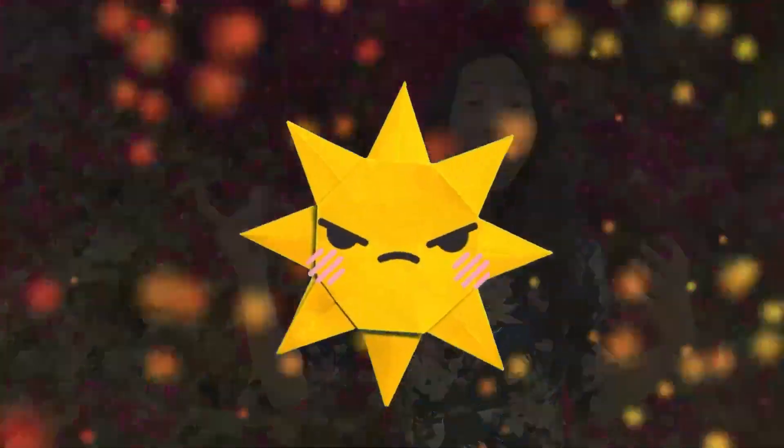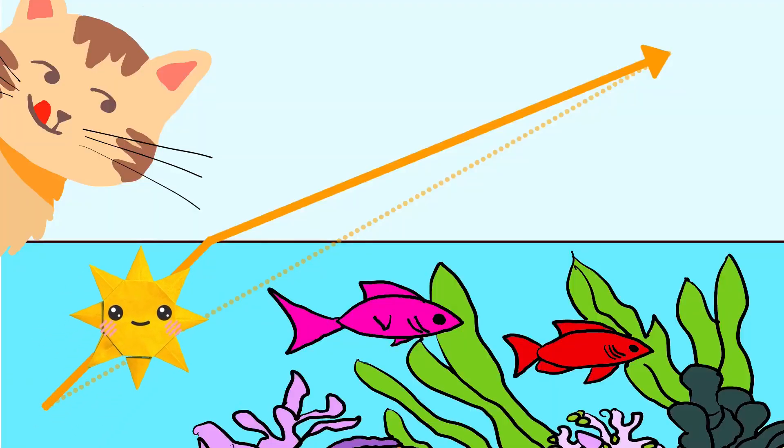Photons, the particles of light, are always in a hurry. They choose the path that takes the least time, even if it's not the most direct path.